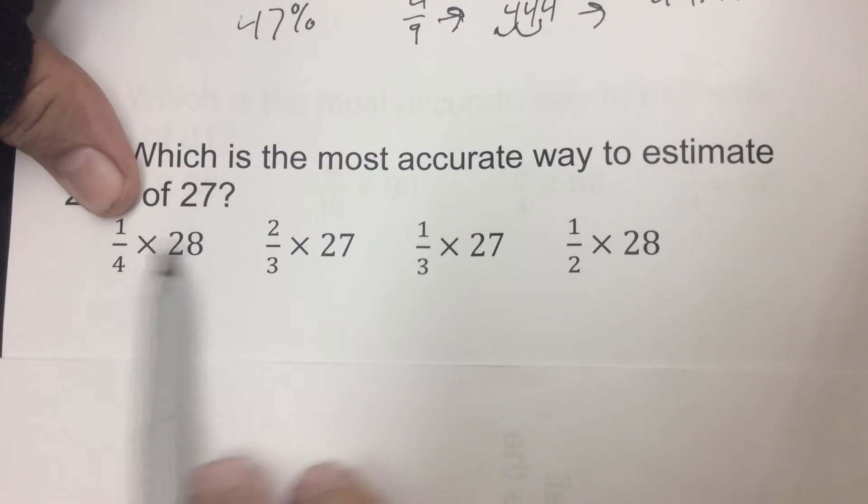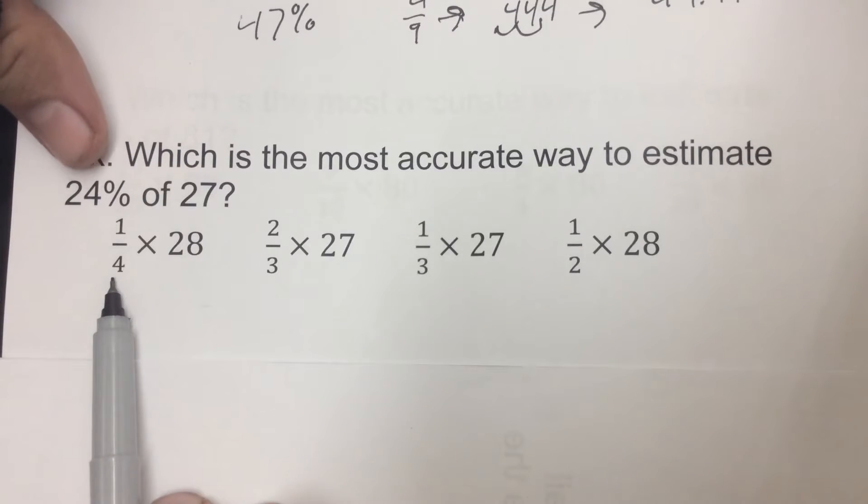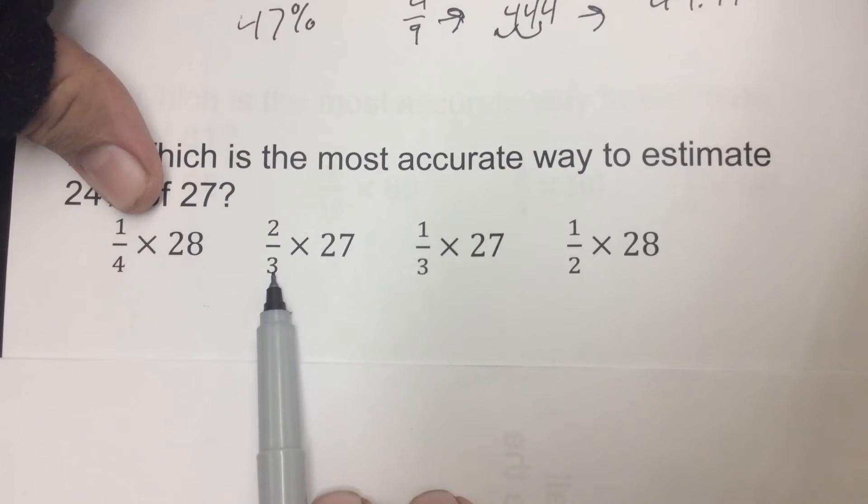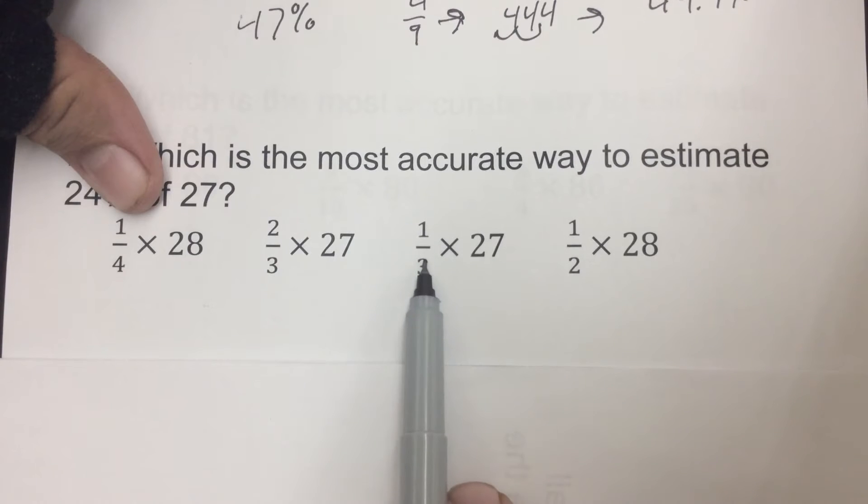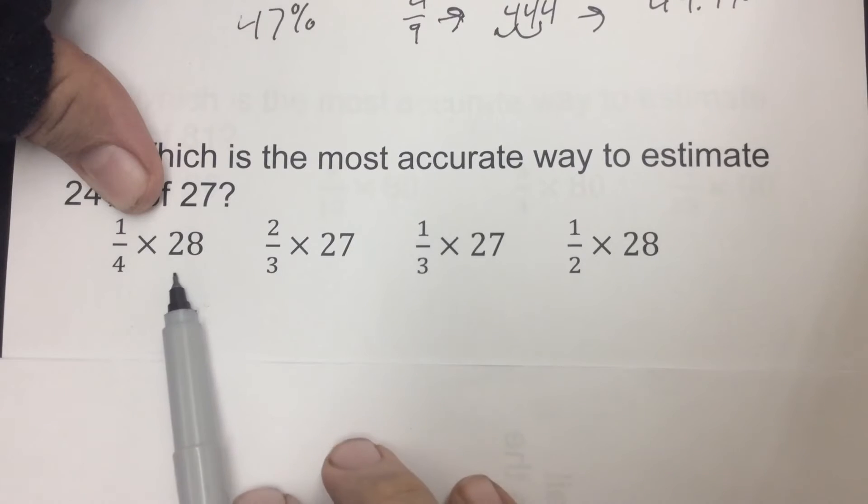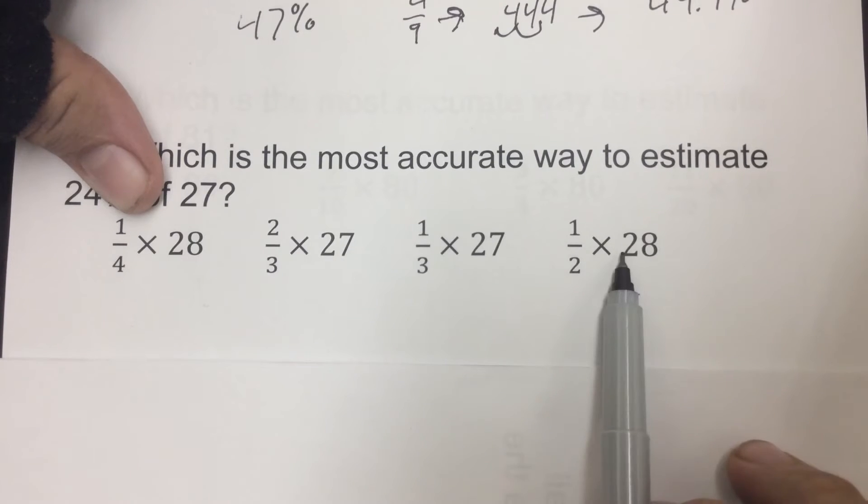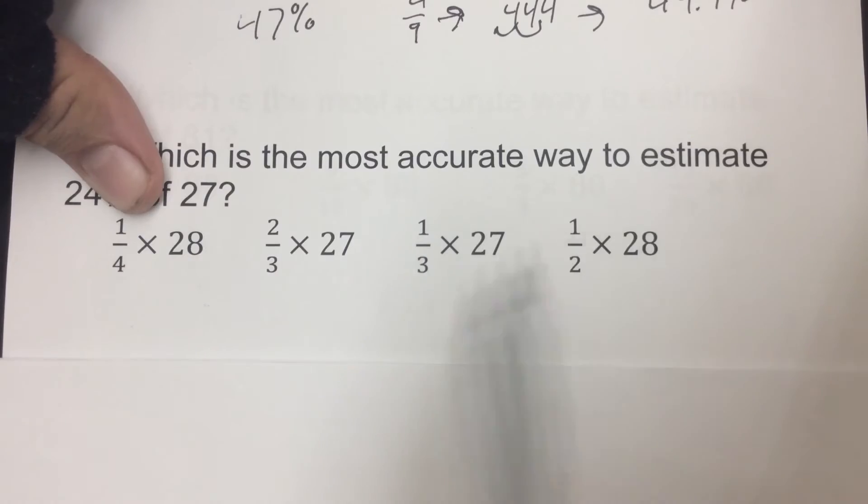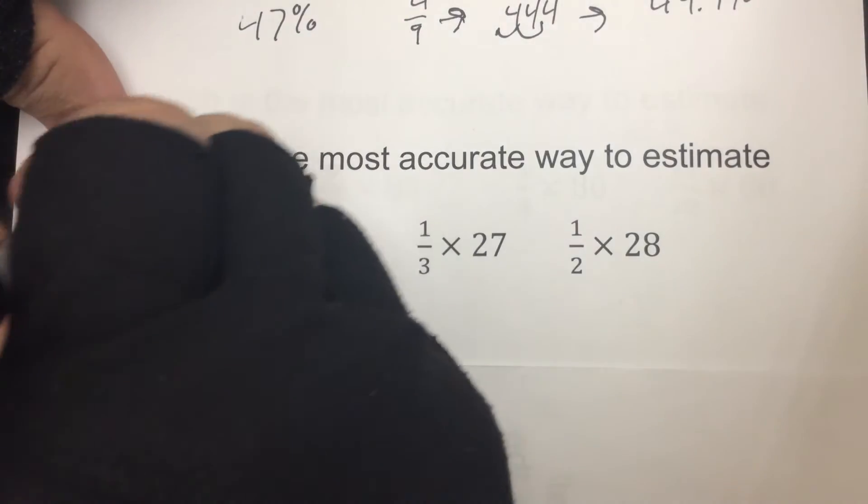Now always go through and make sure. Like here, one-fourth of 28 is close, so that's good, but one-fourth for sure is gonna fit this 25%. Two-thirds is definitely bigger. One-third is close, but 24% is closer than one-third; one-third would be 33%. So definitely sticking to the one-fourth. And one-half, again a little bigger, so here it's a little more obvious.